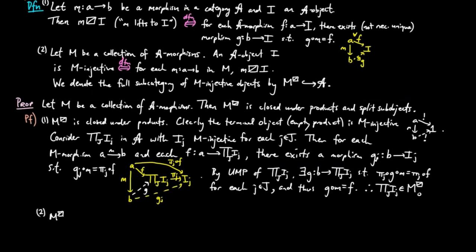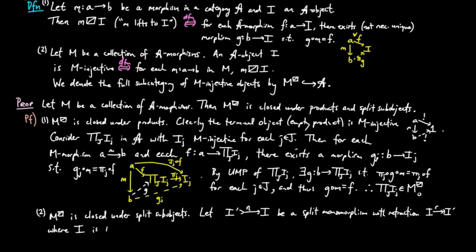Second, we show the injectivity subcategory is closed under split sub-objects. So let I' be a split sub-object of I and N be a split monomorphism with retraction R, where I is M-injective.